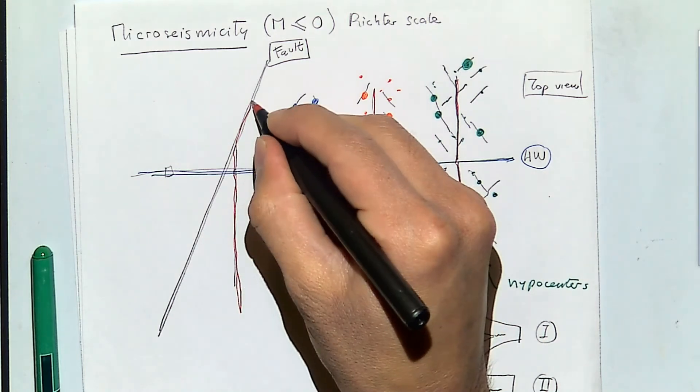Unpropped fractures are problematic. You can create a lot of micro seismicity, but without proppant, as effective stress starts to increase again the fracture closes and its conductivity decreases significantly with time. At the end, if there is no proppant in the shear-reactivated fractures, you're left with only the main hydraulic fracture contributing to production.